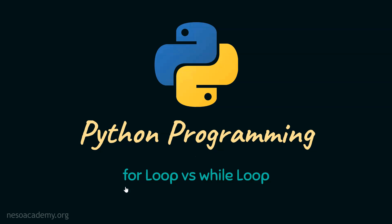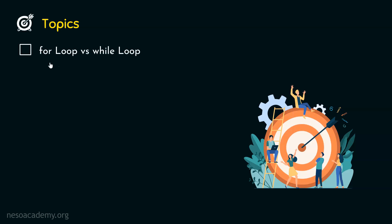In this presentation, we will understand the major differences between for loop and while loop. Without any further delay, let's get started. In this lecture, we will understand a total of three differences between for loop and while loop, which helps us differentiate between them and helps us in choosing for loop over while loop, or while loop over for loop in some situations. Let's understand the first major difference.